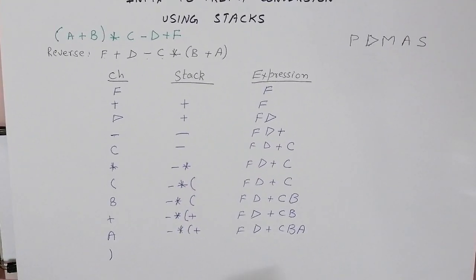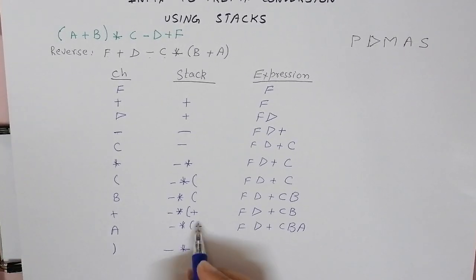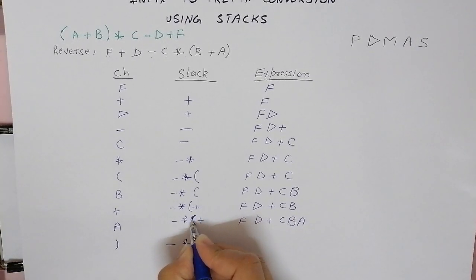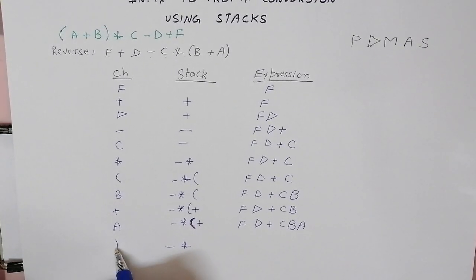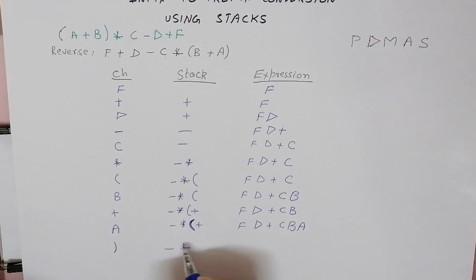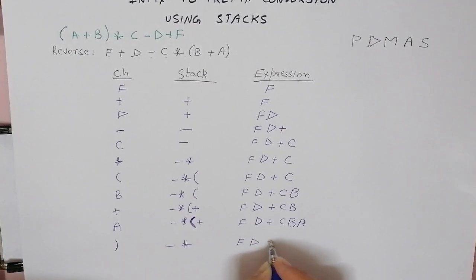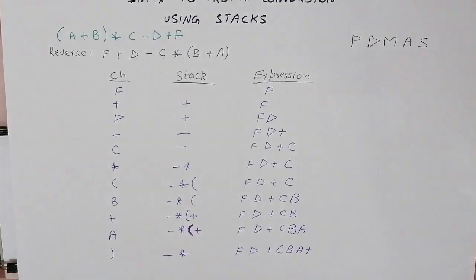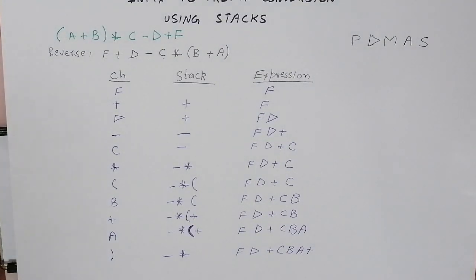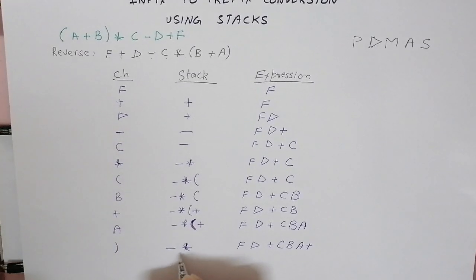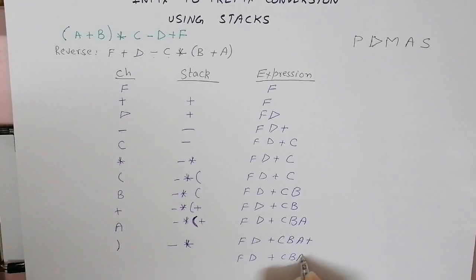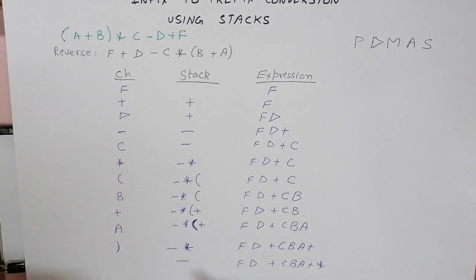After A, we encounter a closing bracket. A closing bracket causes all operators pushed after its corresponding opening bracket to be popped out. The corresponding opening bracket is identified, and all operators placed after it — which is plus — are popped to the output. The expression becomes F D plus C B A plus. There are no more characters in the expression, but we have two operators remaining on the stack — multiplication and minus — which are popped out one by one.